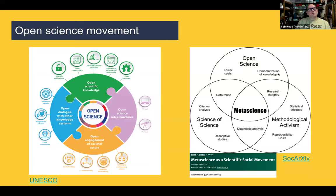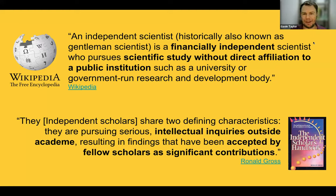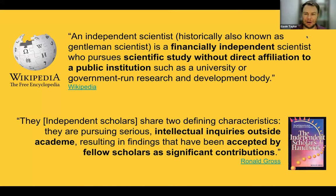The next section of the talk is about independent researchers. A lot of people come across the Wikipedia entry on independent science, which starts by saying the gentleman scientist is still around — financially wealthy independent scientists who fund their own research without being part of a public institution. But I don't think there have been many of these around — that hasn't been the majority of people. A more representative statement comes from Ron Gross's book from the 1980s, which says to be an independent scholar or researcher, you're doing work outside the academy, but a key part is that the scholarly or academic community thinks what you're doing is significant.